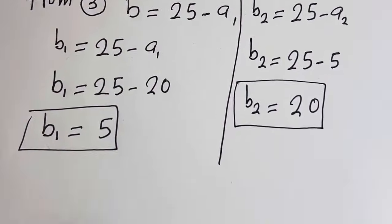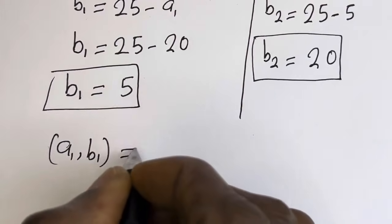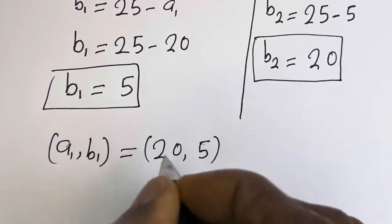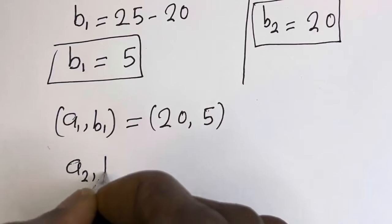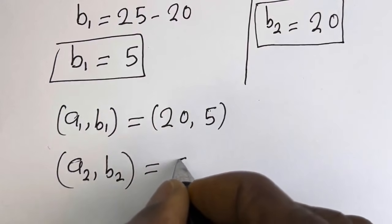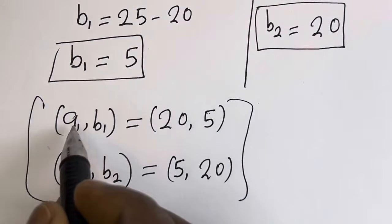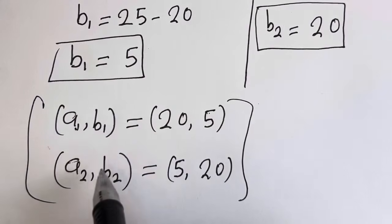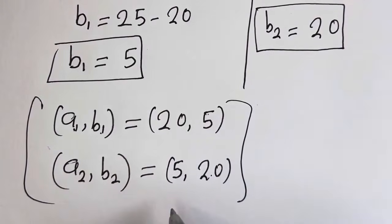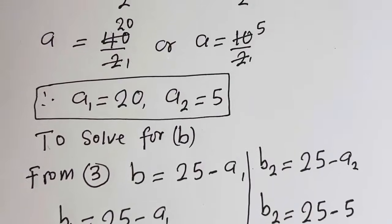Therefore, our final answers are: A1 is equal to 20, B1 is equal to 5; and A2 is equal to 5, B2 is equal to 20. You can see that the value of A1 is equal to the value of B2, and the value of B1 is equal to the value of A2. I hope you enjoyed this video. Thank you for watching — please don't forget to like, share, comment, and subscribe to my channel. Bye bye.